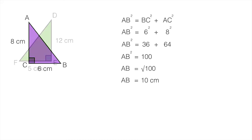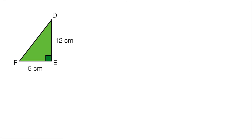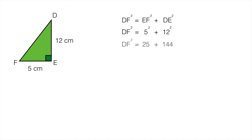On to the second example — here we need to find the hypotenuse DF. DF squared will be equal to EF squared plus DE squared. Substituting those values: EF is 5 and DE is 12. 5 squared is 25 and 12 squared is 144, so DF squared is 169.